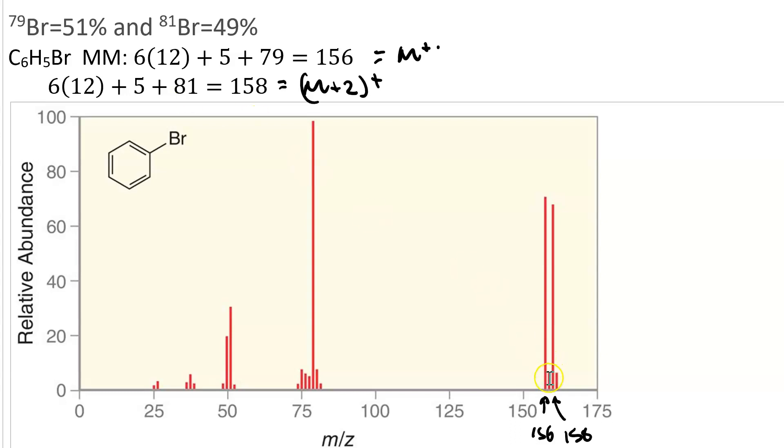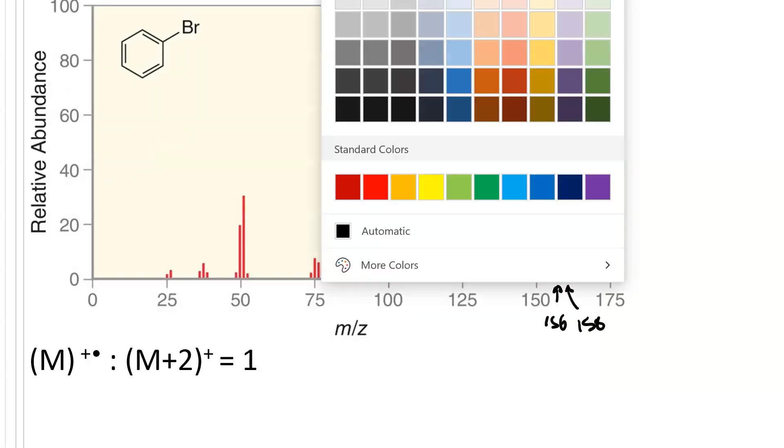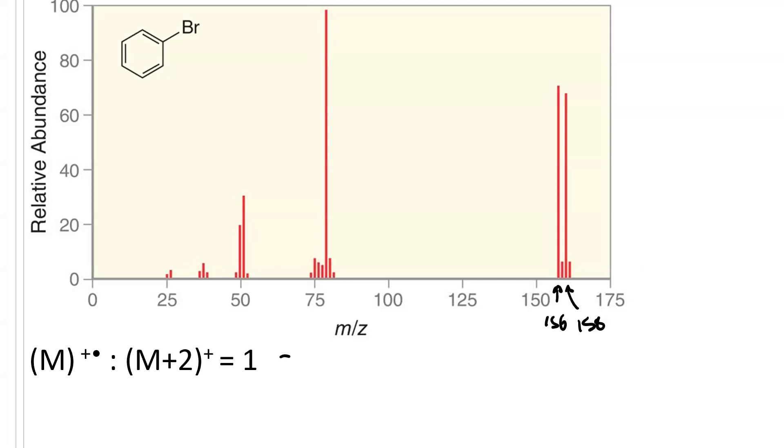Notice also that each one of these has an M plus 1 peak. There's the M plus 1 here at 157 - that's the M plus 1 for carbon-13 with bromine-79. And then you have 158 for the bromine-81, and 159 for carbon-13 in the bromine-81. When the ratio of intensities of the M peak to the M plus 2 peak is 1 to 1, that means the compound contains bromine.